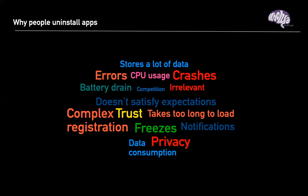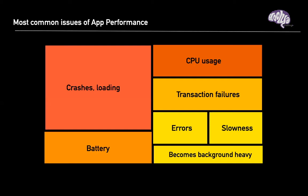The most common performance issues are crashes — when you're not able to use anything at all, the app just shuts down and you have to reopen it. What leads more to uninstalls is when you're entering details and the app crashes — you have to re-enter the entire form again, and at that point users are no longer willing to go back and fill in the fields. That's when you lose users.